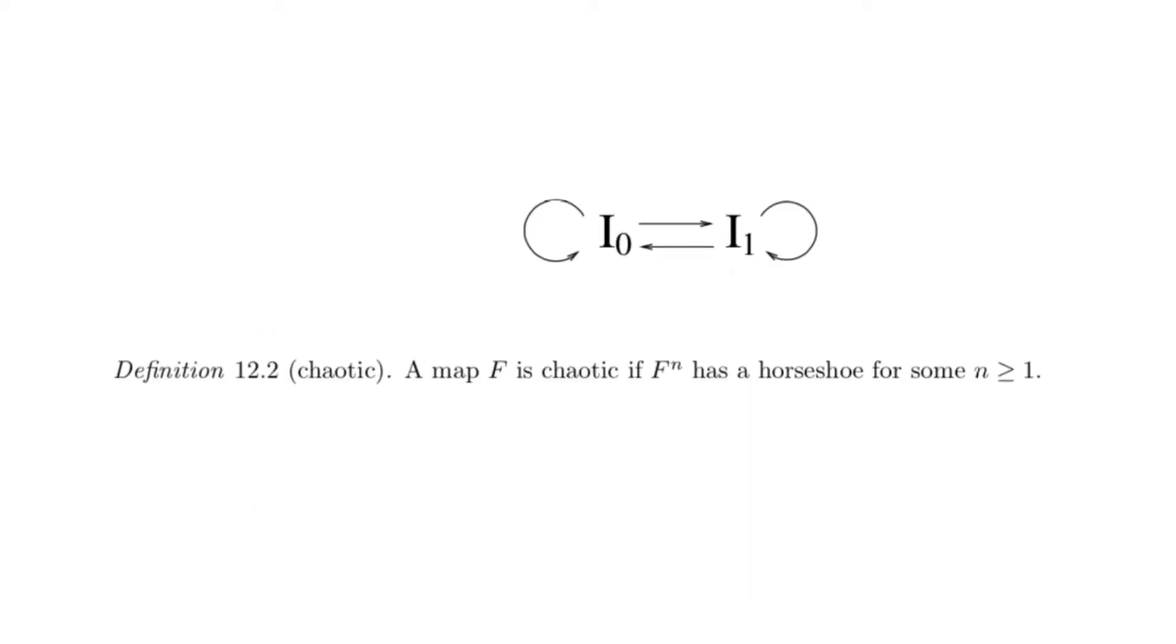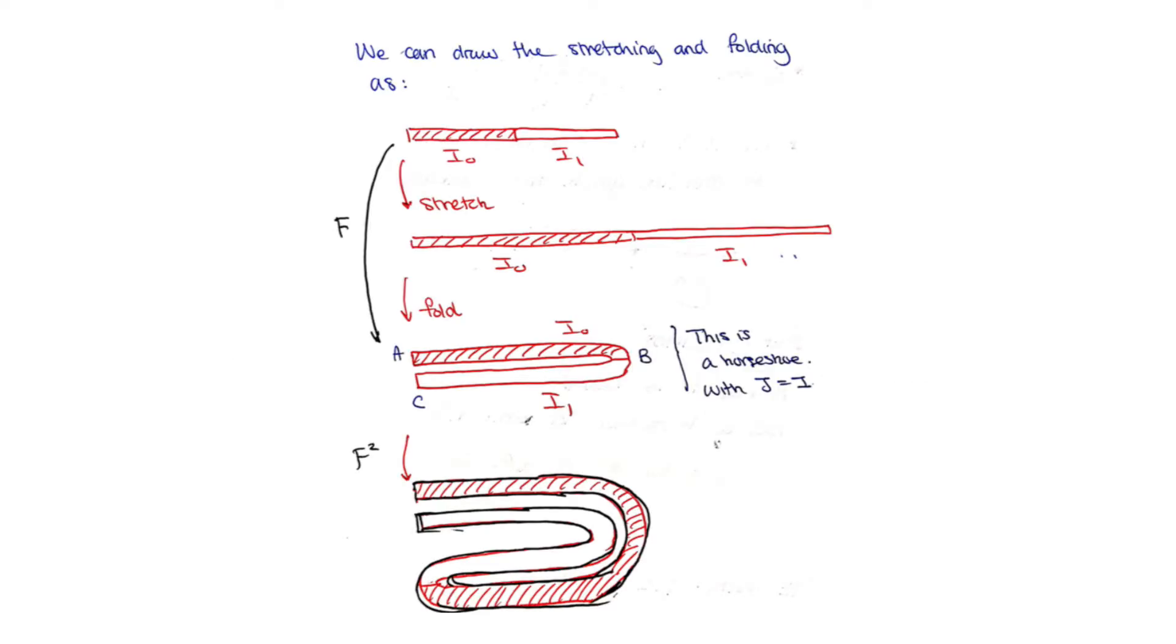Here, chaos was defined in terms of the existence of so-called horseshoe structures in f to the n. These horseshoe structures don't depend on studying maps on the real line, but rather only depend on establishing covering structures in the map. We also discussed how this is related to stretching and folding.